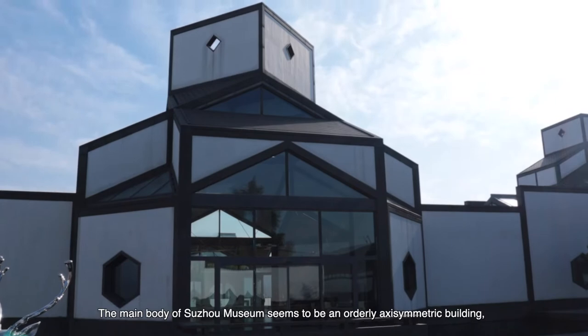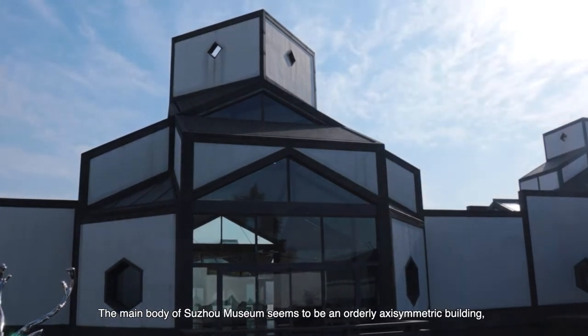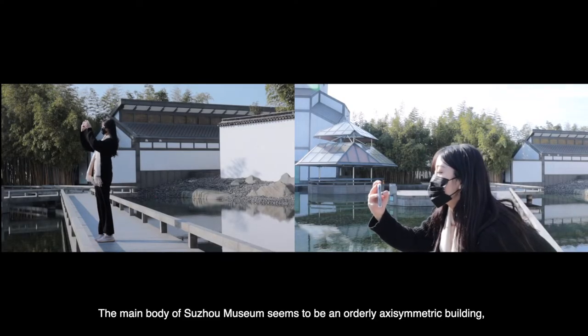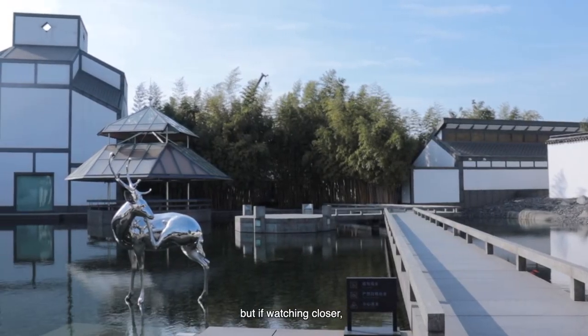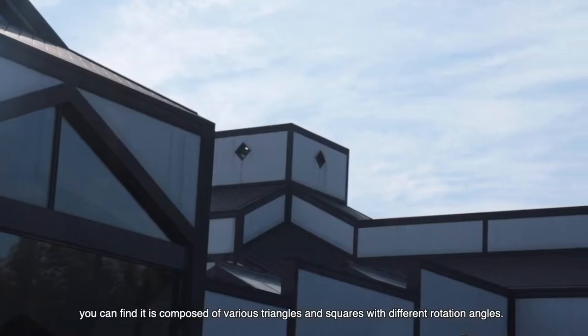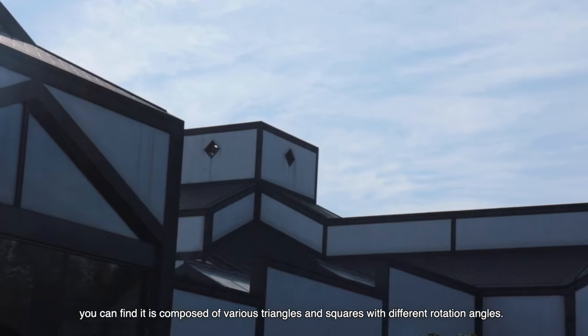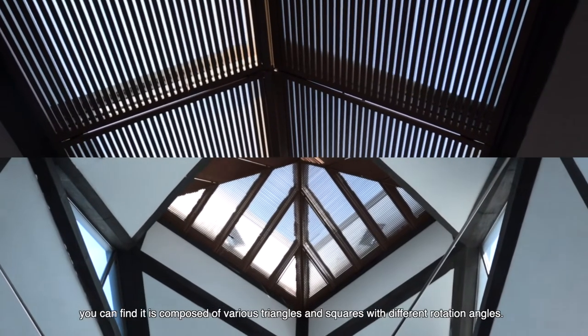In this, the main body of Suzhou Museum seems to be an ordinary axis-symmetric building, but if watching closer, you can find it is composed of various triangles and squares with different rotation angles.